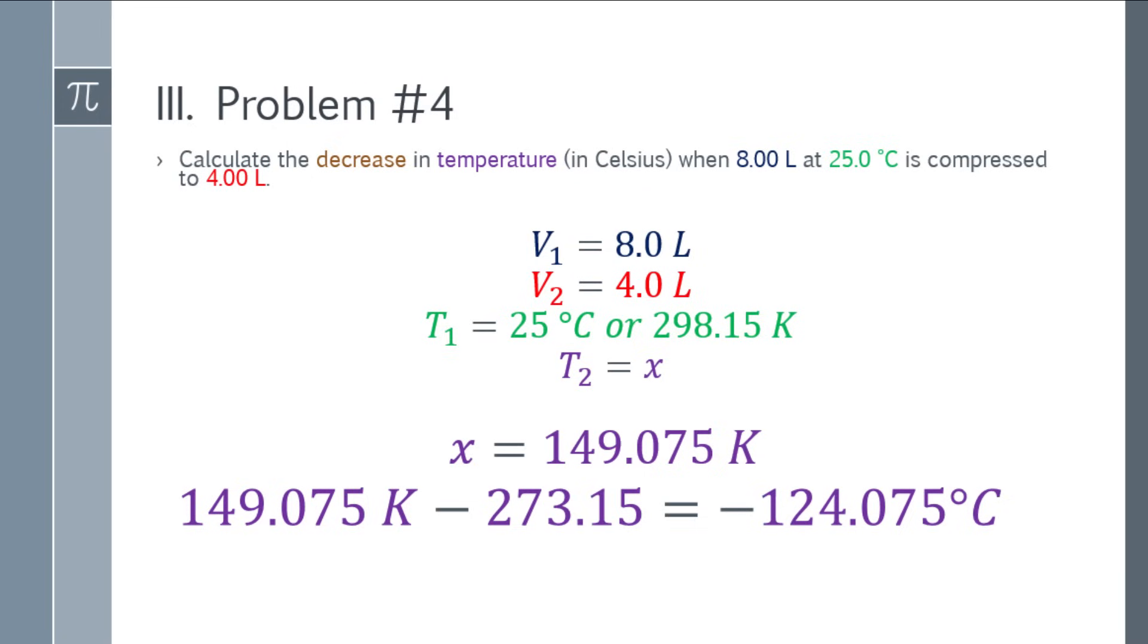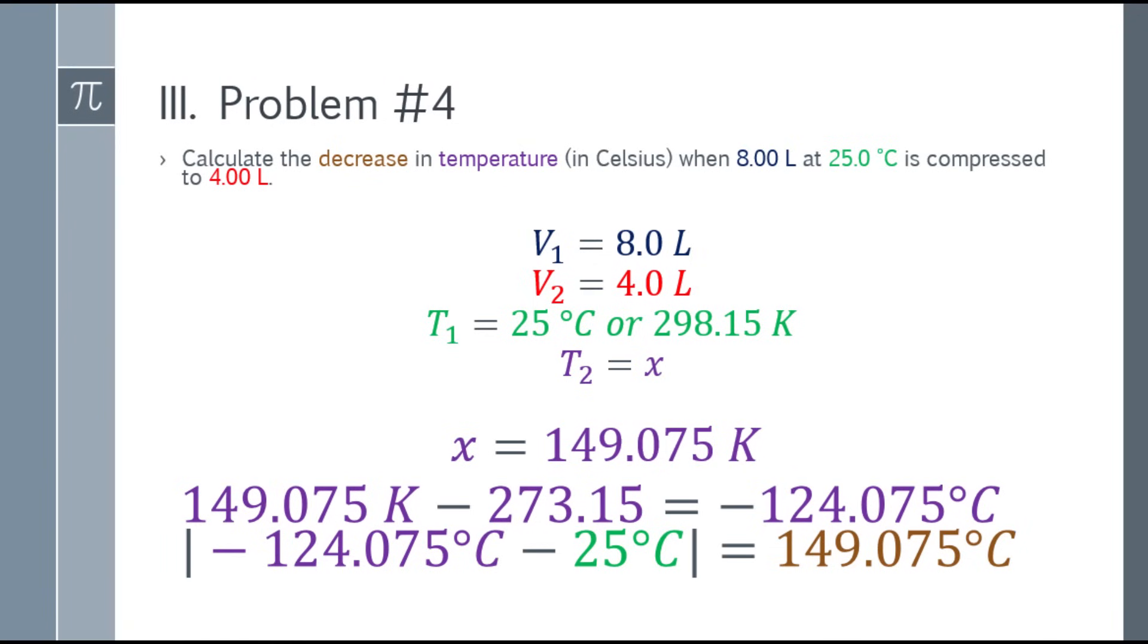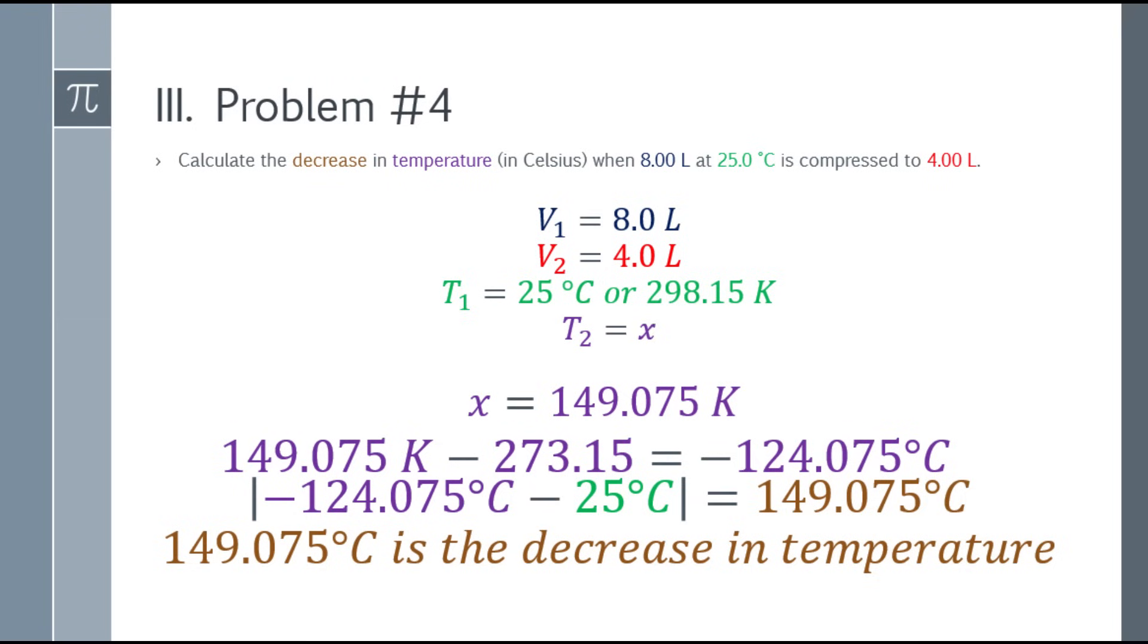Now find the absolute value, the difference, the distance of negative 124.075 from 25 degrees. Find their absolute value, and you will arrive at 149.075 degrees Celsius. The distance of 25 on the number line to negative 124.075 is 149.075. So the final answer is 149.075 degrees Celsius is the decrease in temperature.